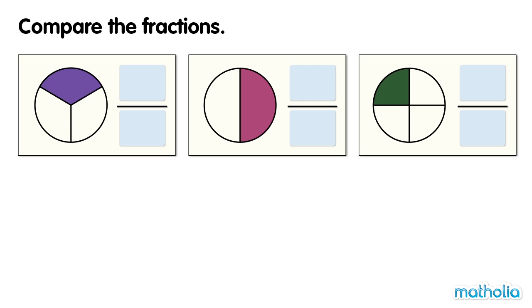Compare the fractions. This circle has three equal parts. One part is shaded. One third of the circle is shaded.